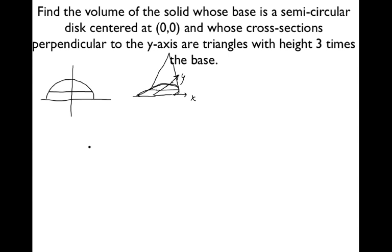The very tallest triangle will be the one on the x-axis, because that's going to have the longest base. And then here we just come to a point — the smallest, shortest triangles are here at the top of the semicircular disk; the largest ones are at the bottom. So we think of this as like a tile — a triangular tile with a little thickness to it.